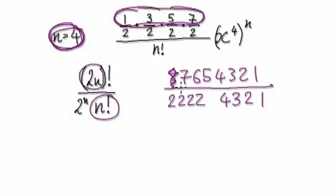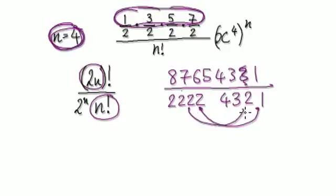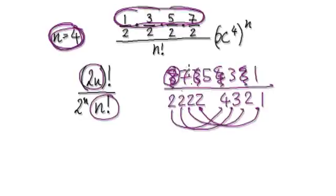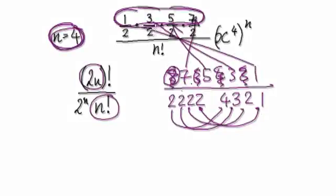So now if you want to get rid of all the even ones, look at this: 2 times 1 gives 2, which cancels the 2. Then 2 times 2 gives 4, then 2 times 3 gives 6, and 2 times 4 gives 8. So you can get rid of the 8. What you're left with is 7, 5, 3, and 1.